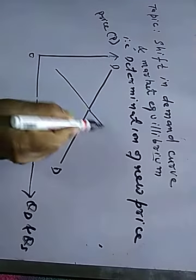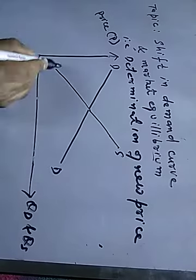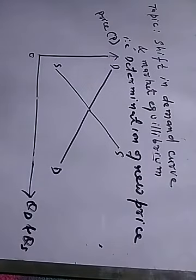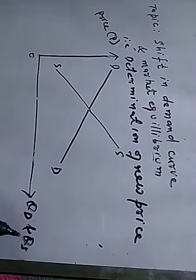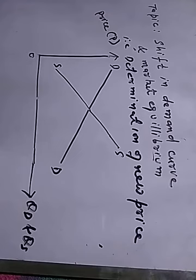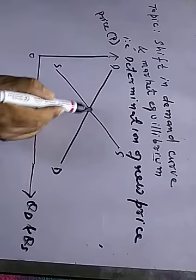This is the upward sloping supply curve, based on the law of supply. It shows a direct relationship between price of a good and quantity supplied — when price increases, quantity supplied will increase, because increase in price leads to increase in profits of the producer, which is the objective of the producer.